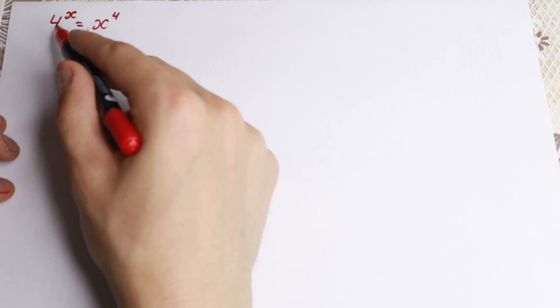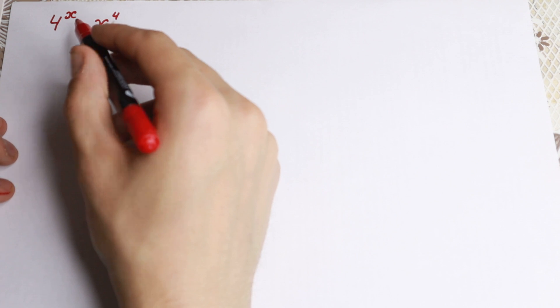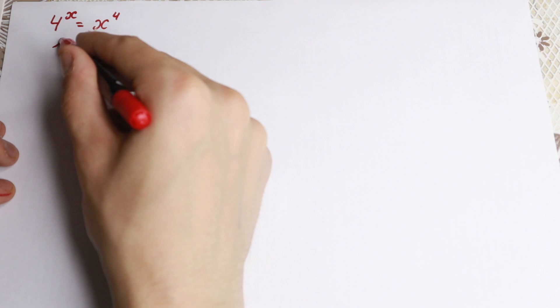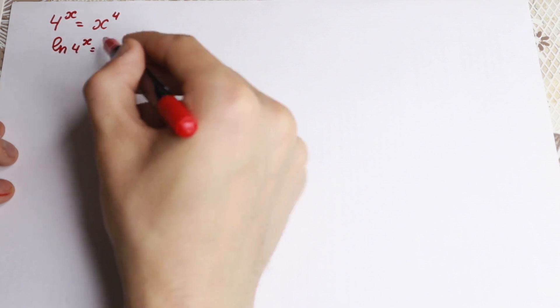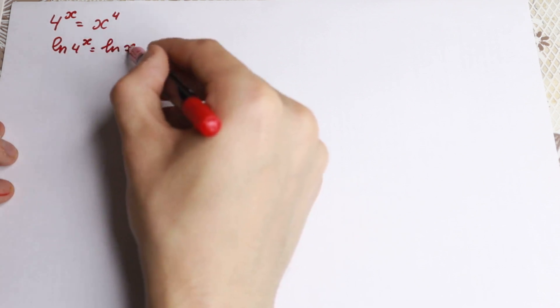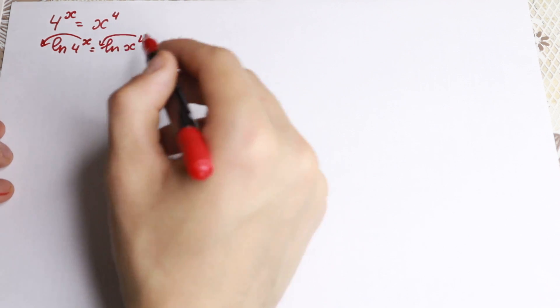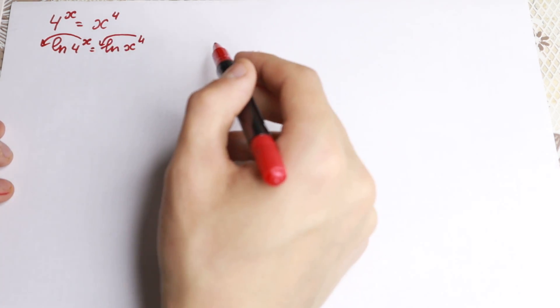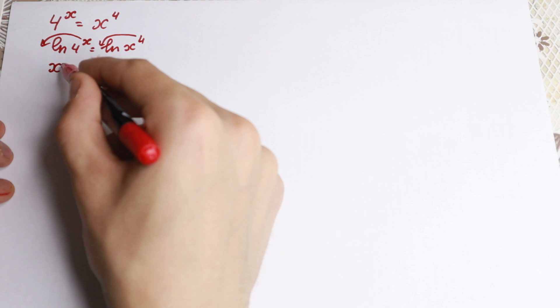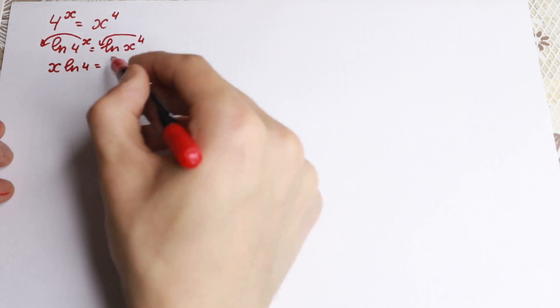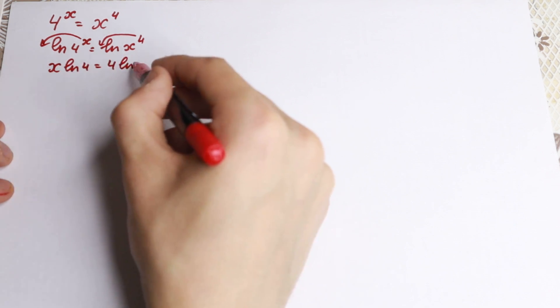Since we have exponents here, it's really good to apply log on both sides. So we have natural log of 4 to the x equals natural log of x to the 4th power. Using the log power property, x comes out here and 4 comes out here, giving us: x·ln(4) = 4·ln(x).